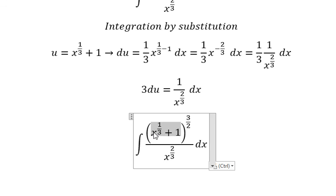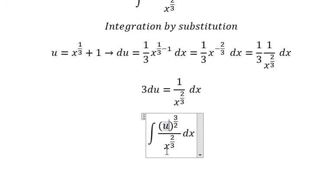We change this to u. The dx over x to the power of 2/3 becomes 3du.